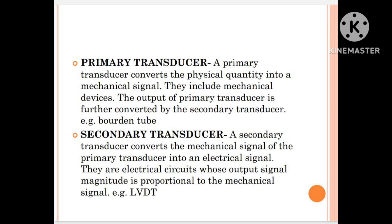We can take the example of Bourdon tube for pressure measurement. When we use the Bourdon tube for pressure measurement, if the result is in the form of voltage with the help of LVDT, then the Bourdon tube is said to be the primary transducer and LVDT is said to be the secondary transducer.